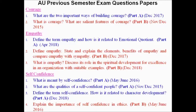The next topic is Self-Confidence. Under this topic, Part A and Part B questions were asked. Part A questions are: what is meant by self-confidence? What are the qualities of self-confident people? Define the term self-confidence and how is it related to character development? The Part B question is: explain the importance of self-confidence in ethics. These are all direct questions, so you can find the answers in the book or refer to my slides.